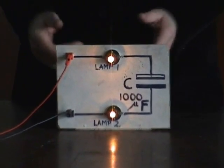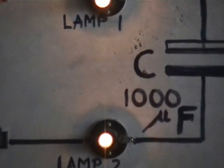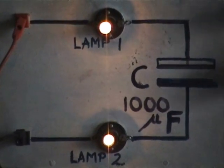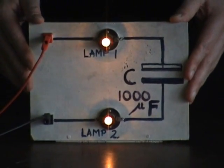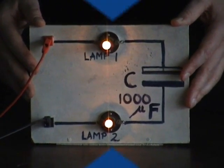But again, if that was direct current, you'd only have the initial flash. So there you go, demonstrating that alternating current will flow with a capacitor, but direct current will not flow with a capacitor. And we'll see later on what applications we have for this. We'll see you next time.